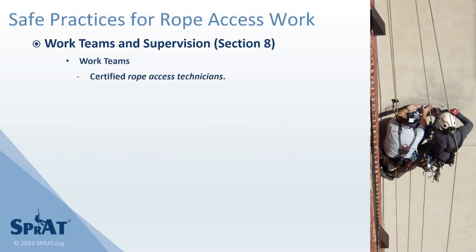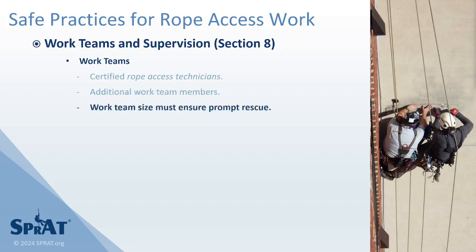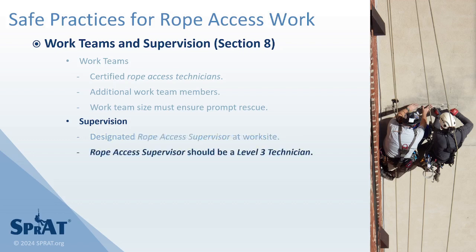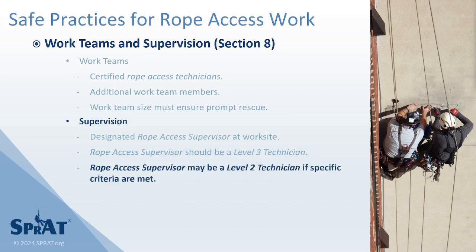Certified rope access technicians must be used for all rope access operations. Additional work team members may operate rope access systems if specific criteria are met. Work team size is determined by the number required to ensure prompt rescue. All work teams must be directed by a rope access supervisor present at the worksite. This rope access supervisor must meet all requirements of Section 4 and should be a Level 3 technician. A Level 2 technician may be designated as a rope access supervisor if specific criteria are met.